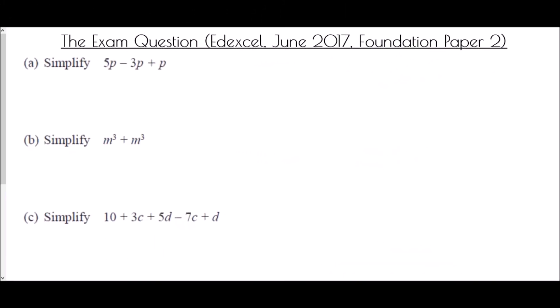Finally we come to the exam question from the Edexcel paper in June 2017, foundation paper 2, in three parts. First: simplify 5P take away 3P plus P. They are all P's - remember the lone P is 1P. 5P take away 3P gives 2P, then plus 1P gives 3P.